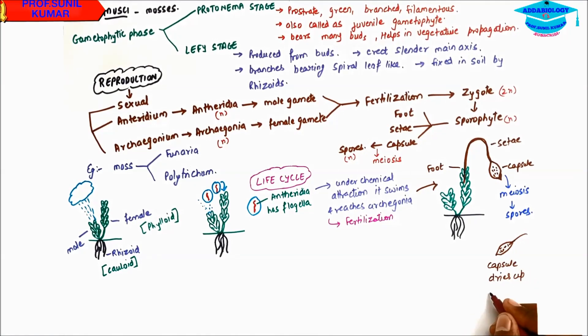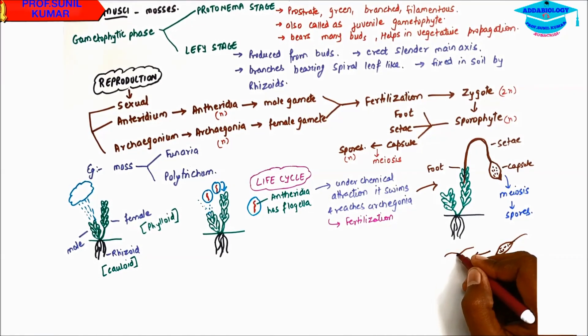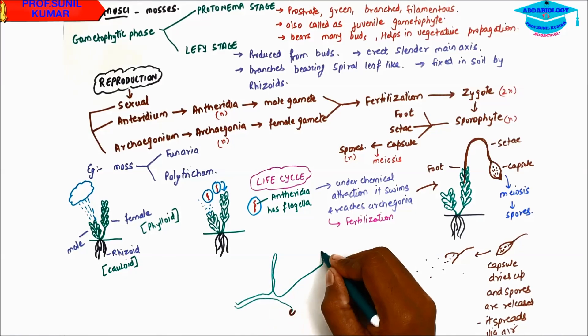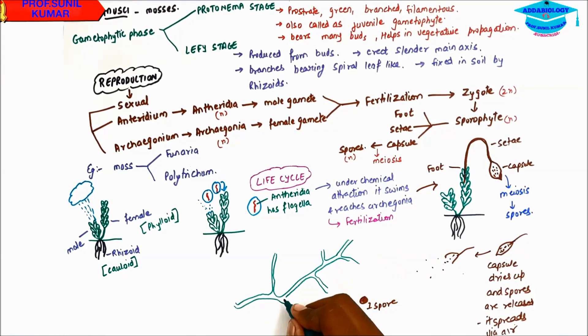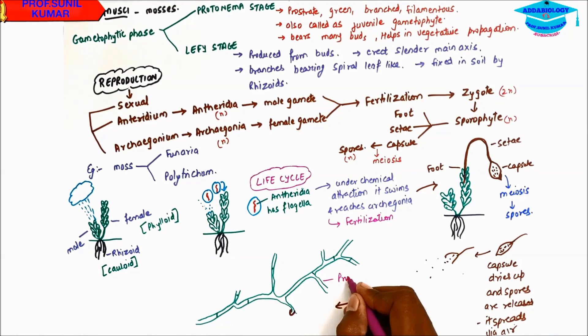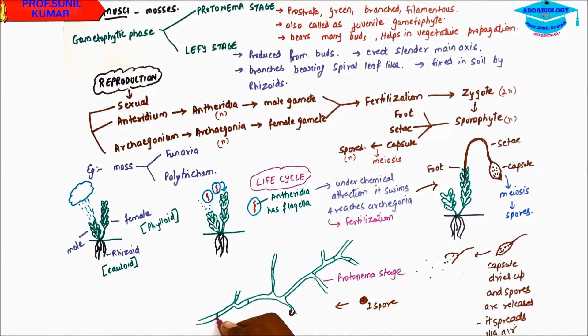Now the capsule contains lots of spores which are produced by a process of meiosis. Now the capsule dries up and the spores are released which spread with the help of air. And let us say the spore falls somewhere on the earth's surface a few distance away. So these spores now will germinate and give rise to the branched part or the protonema stage of the gametophytic phase. Now this protonema stage will be prostrate, branched, and filamentous.